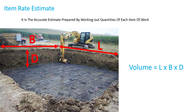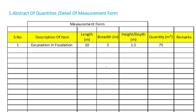The first one is Item Rate Estimate. It is the accurate estimate prepared by working out quantities of each item of work. In this type of estimate, we have to take each item separately. For example, if we want to prepare an estimate for excavation, we need to find out the total volume by multiplying length, breadth, and depth. We then prepare a detail of measurement form and put all the dimensions on this form.